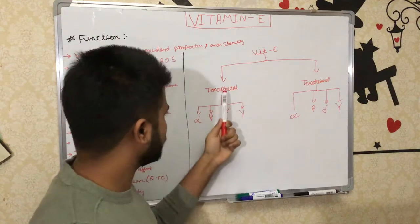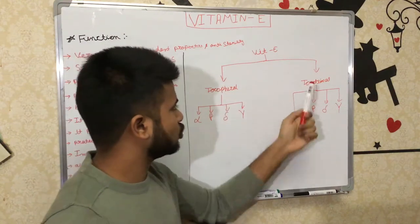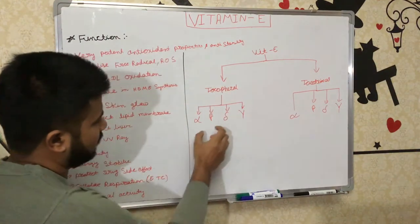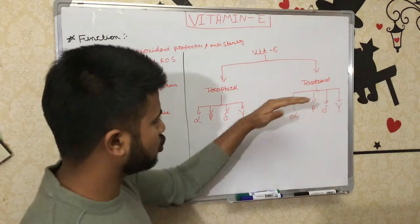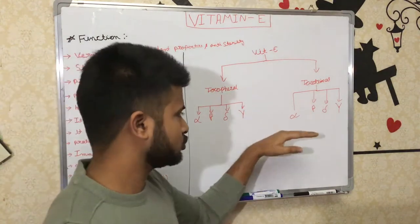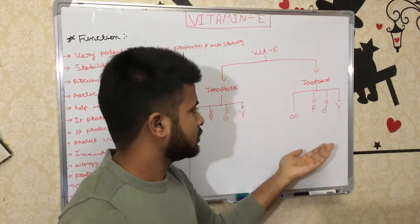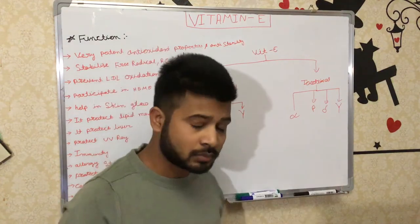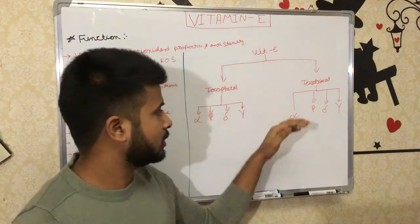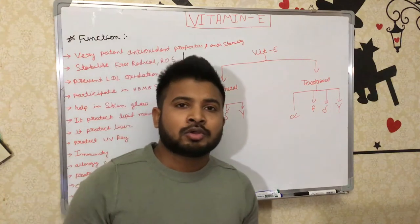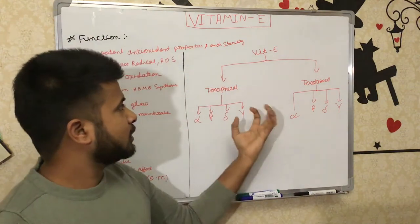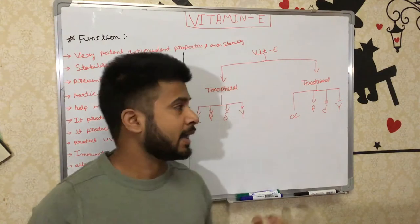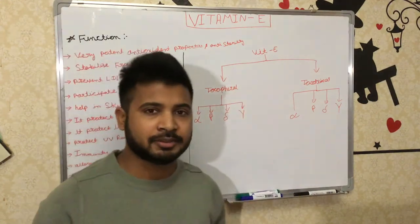Vitamin E is collectively referred to from two types of subgroups: tocopherol and tocotrienol. Tocopherol is further subdivided into four groups: alpha, beta, gamma, and delta. Tocotrienol also has four subgroups: alpha, beta, gamma, and delta. So we can say there are eight groups of Vitamin E collectively, and together they make up what we call Vitamin E.